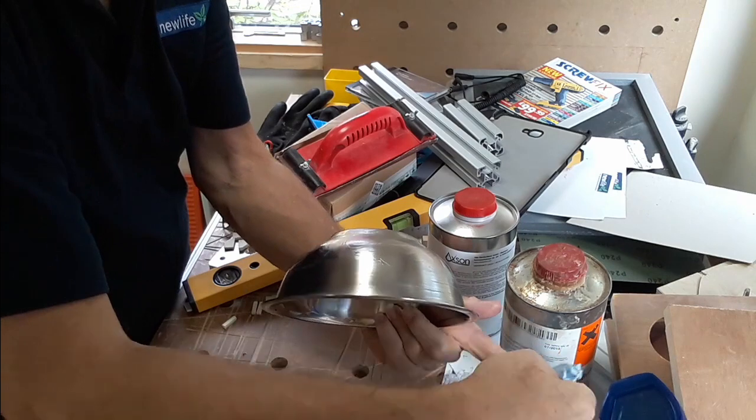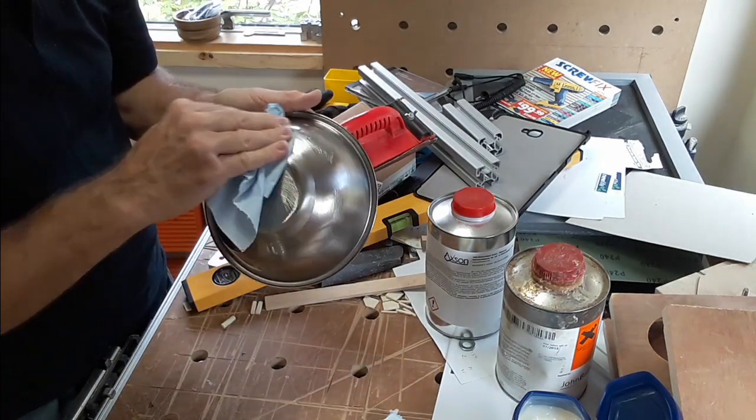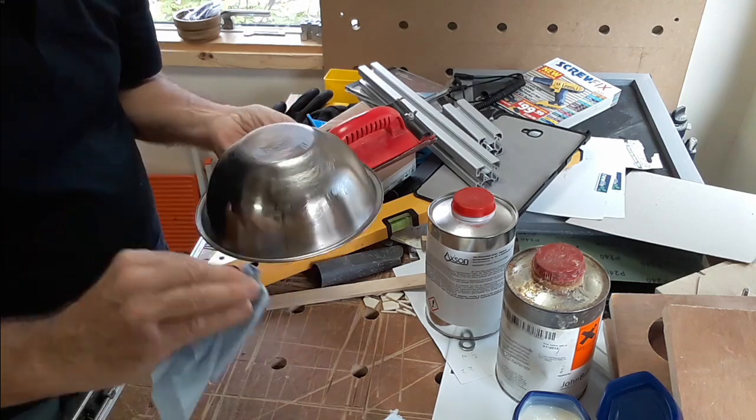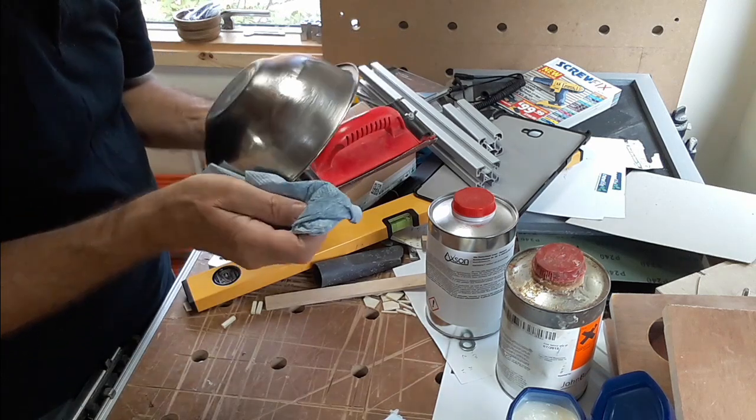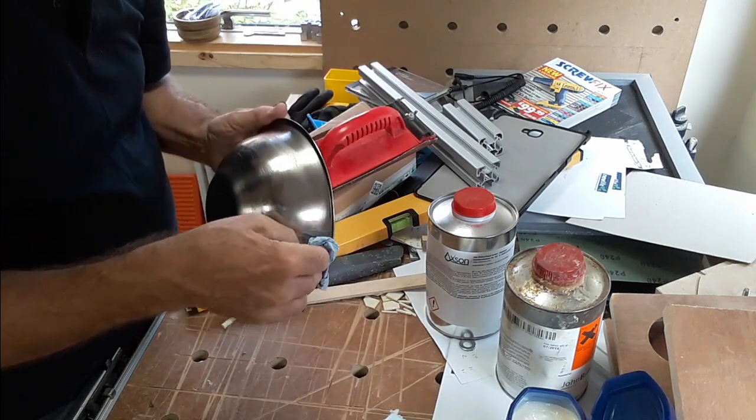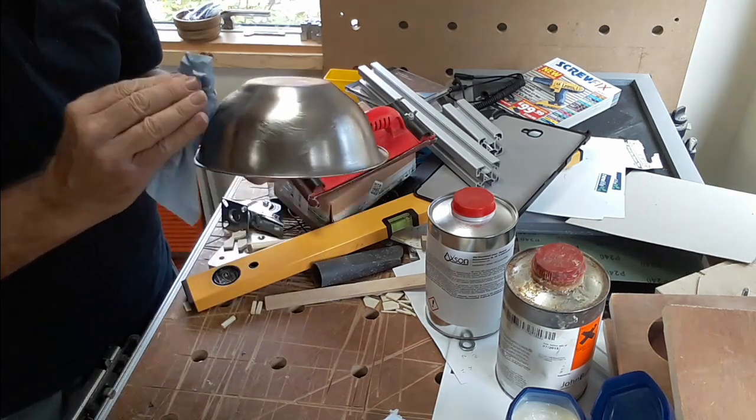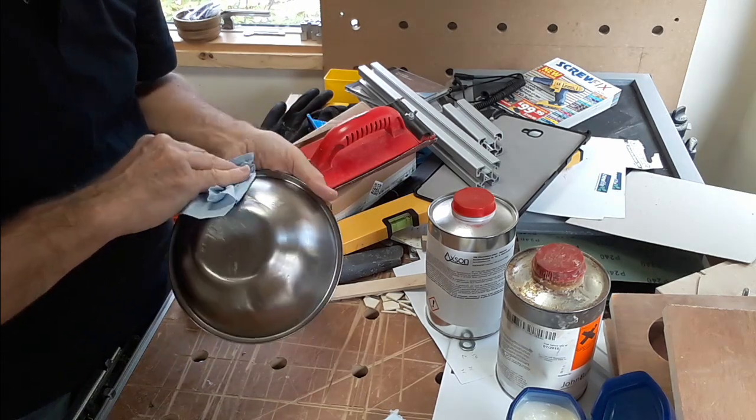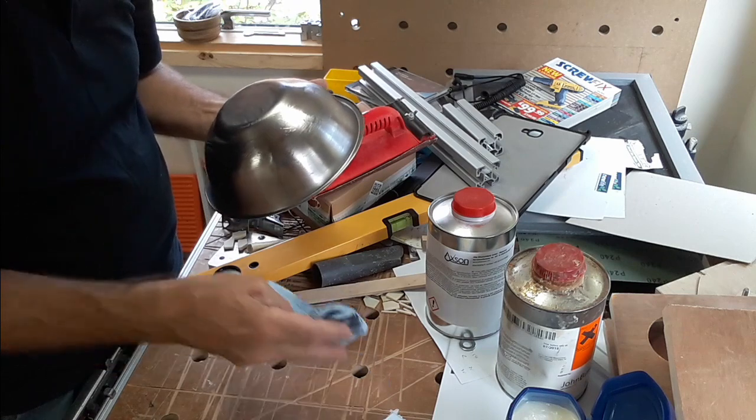Once the resin is set. Now the resins that I'm using are I suppose the same family as those that you see used by all the furniture guys filling knot holes in wood and making live edge tables and things. But essentially it comes out a clear milky white color.